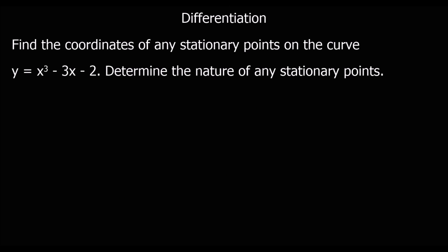Here's another question — pause the video, try and do this one, and then I'll go through the answers. So again, we need to find the coordinates of the stationary points, meaning find where dy/dx equals zero. So dy/dx is 3x² minus 3 this time.